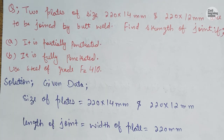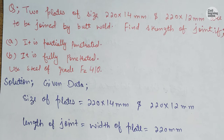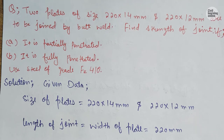The question is that we have two plates — one is 220 mm × 14 mm, where 220 mm is width and 14 mm is thickness, and the other plate is 220 mm × 12 mm thickness. We have to join these two plates with the help of butt weld. Butt weld is what happens when we join two plates head to head along the thickness — that is the butt joint.